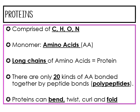Proteins are comprised of C, H, O, and N — carbon, hydrogen, oxygen, and nitrogen. The monomer is an amino acid, sometimes abbreviated as AA. Long chains of amino acids are how you make a protein. There are only 20 kinds of amino acids, and they are bonded together by peptide bonds, so we call them polypeptides.